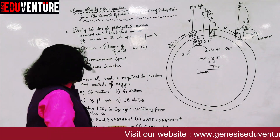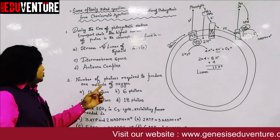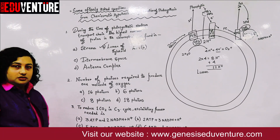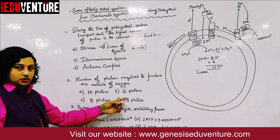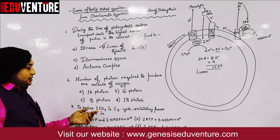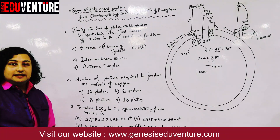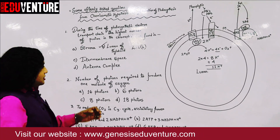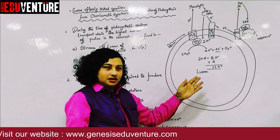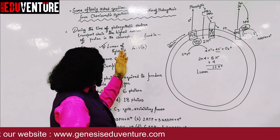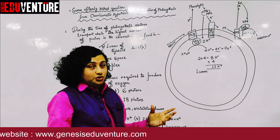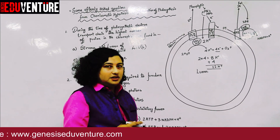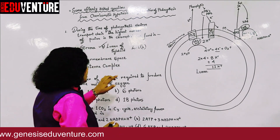Moving on to question 2: the number of photons required to produce one molecule of oxygen. Options: A) 16 photons, B) 6 photons, C) 8 photons, D) 18 photons. Using the same diagram as question 1, since all these questions derive from the same concept.